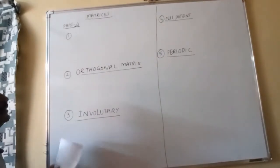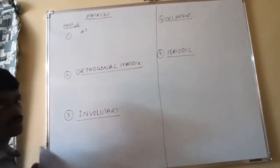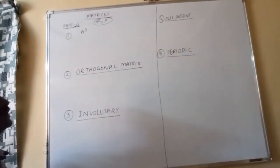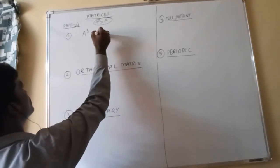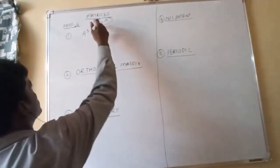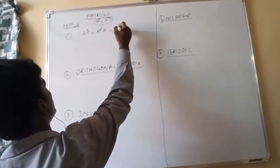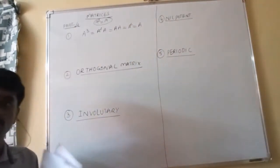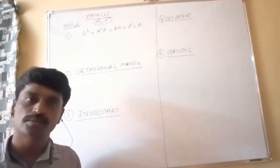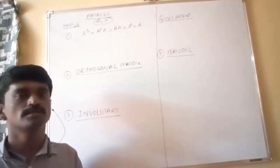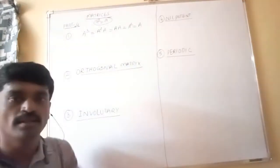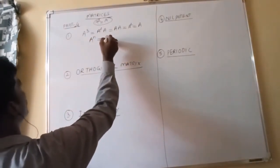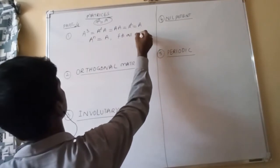For an idempotent matrix, if we calculate A cubed: A³ = A²·A, and since A² = A by definition, this becomes A·A = A² = A. So A³ = A. Similarly, A⁴ = A, and in general, A^N = A for all natural numbers N.